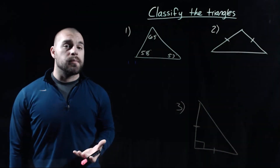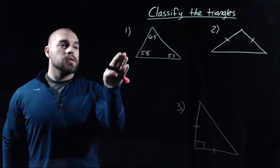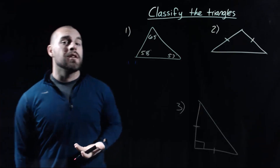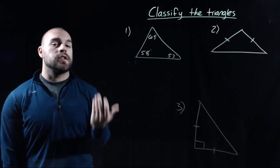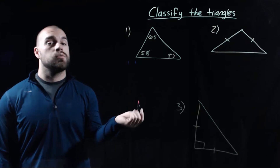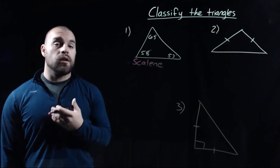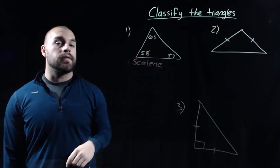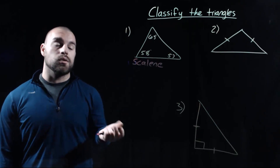Let's look at some examples of classifying triangles by their sides and angles. For number one, classifying by sides first: I don't see any sides marked as congruent, and we can't assume sides are congruent, so this is scalene. Looking at the angle measures — 65 degrees, 58 degrees, and 57 degrees — those are all acute angles, making this also an acute triangle.